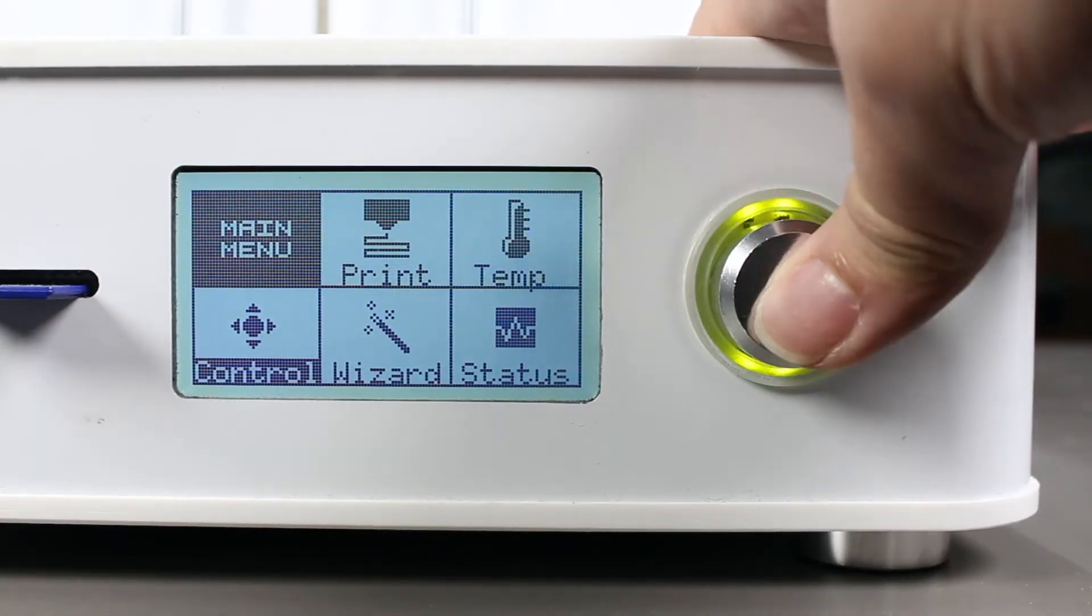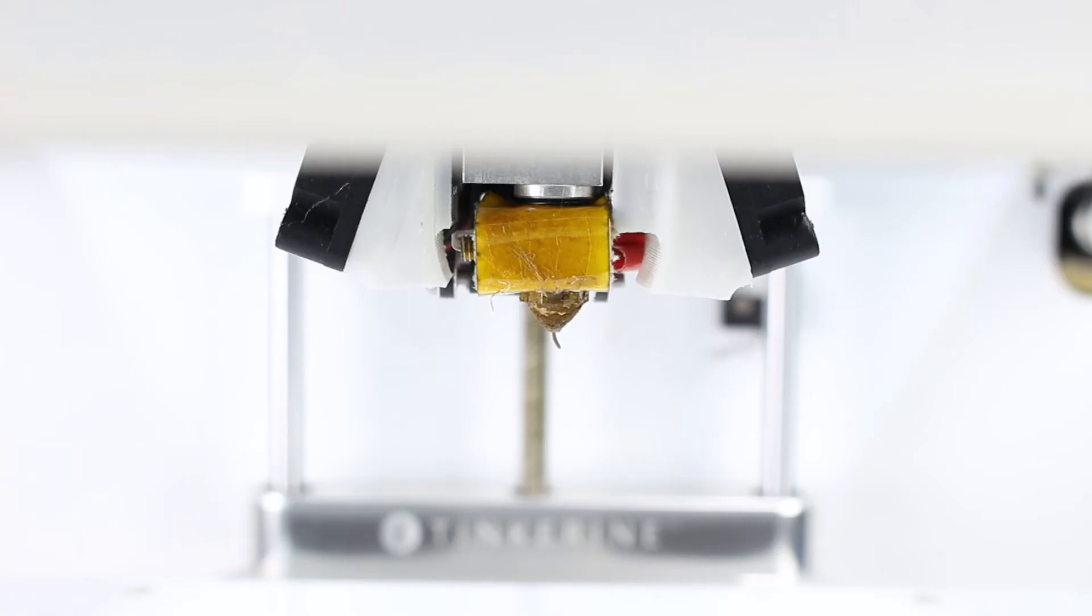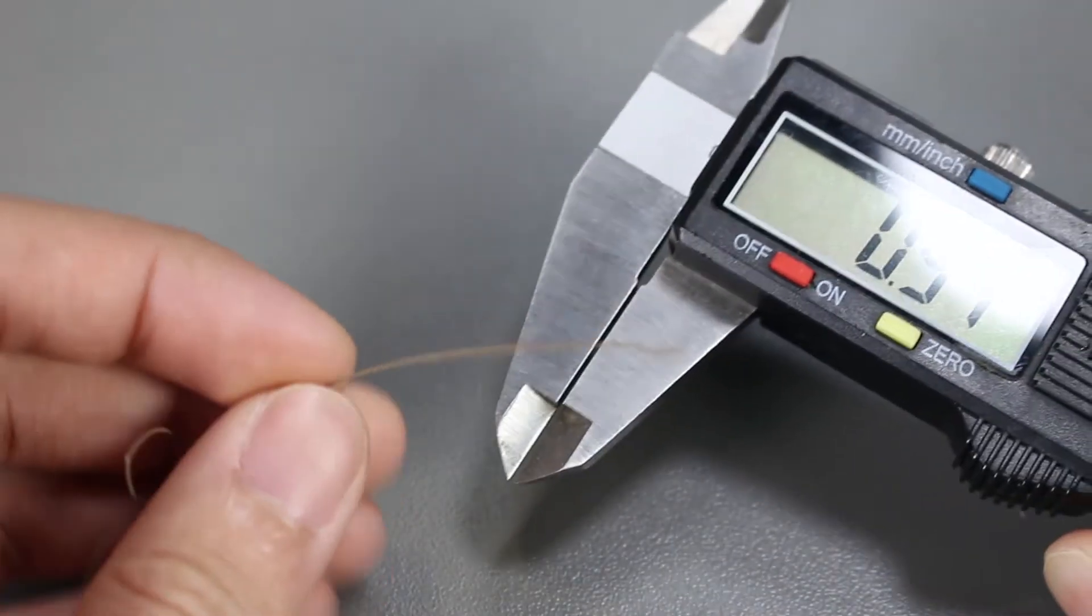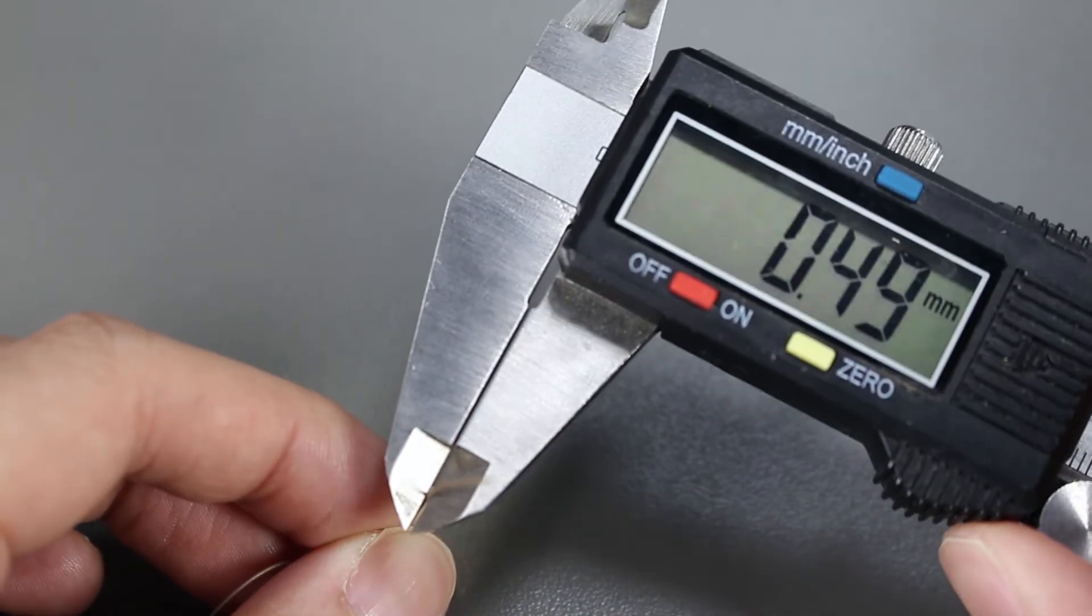Now let's find out the nozzle diameter after we printed six and a half hours on it. The nozzle diameter now is 0.49 millimeters.